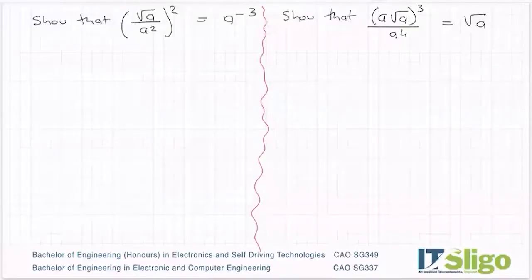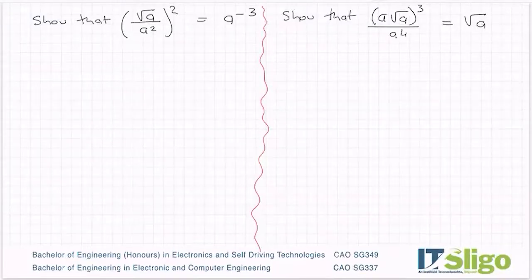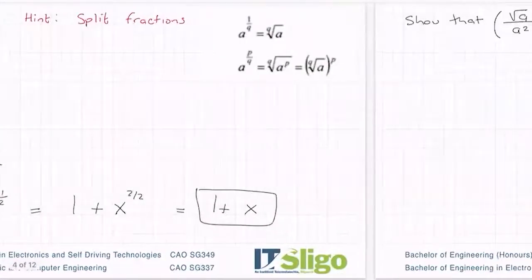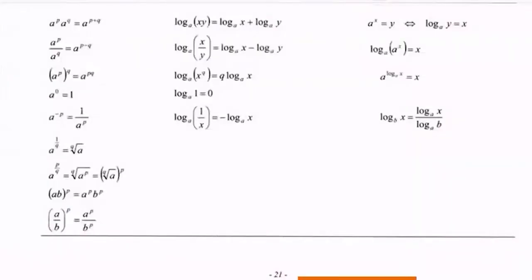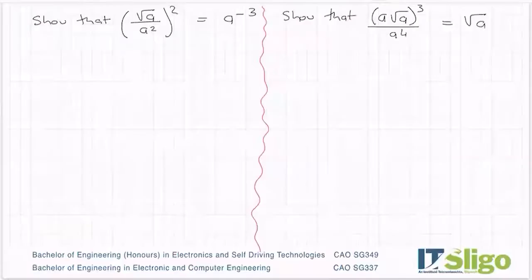Let's have a look at the first one. Show that the square root of a over a squared, the whole thing to be squared, is the same as a to the power of minus three. Building on the ones we just did earlier, it is looking at these rules of indices and figuring out which of them are going to help you simplify it.